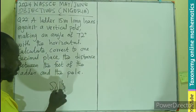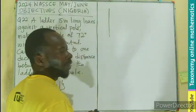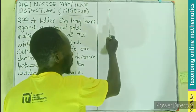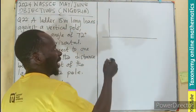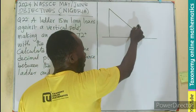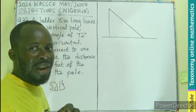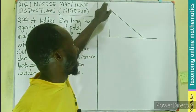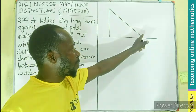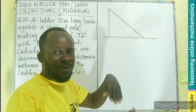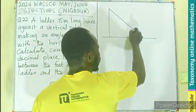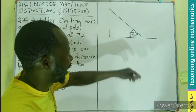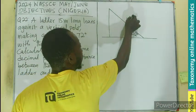If we have our vertical pole like this, which is going to be on the ground, then a ladder will lean against it. One end will be on the ground and the other end will be against the wall. The part on the ground is making an angle of 72 degrees, while the length of the ladder is 15 meters.